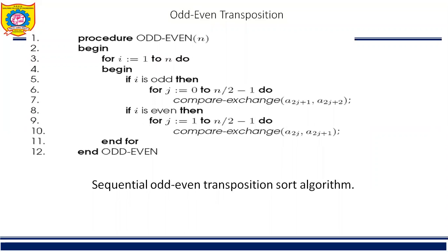This algorithm alternates between two phases called odd and even phase. Let A1, A2, ..., An be the sequence to be sorted. During the odd phase, elements with odd indices are compared with their right neighbors, and if they are out of sequence, they are exchanged. Thus the pairs (A1,A2), (A3,A4), ..., (An-1,An) are compared and exchanged, assuming N is even.